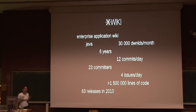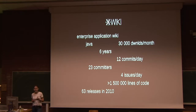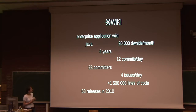So a bit about XWiki: XWiki is an enterprise application wiki written in Java, it's been there for six years. I've been a committer for almost three years now, that's from 2010 — 23 committers, 12 commits per day, four issues fixed per day, which is quite good.